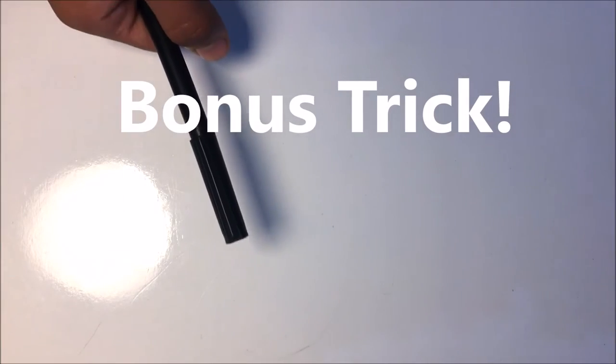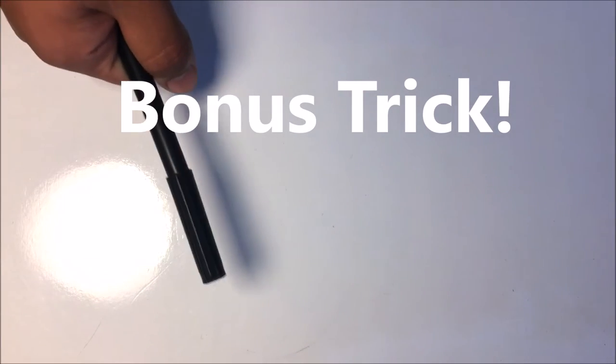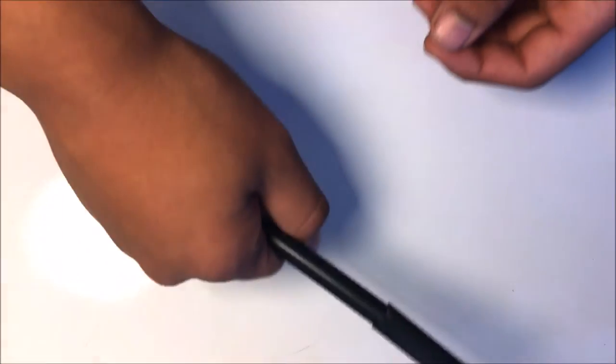Here's a bonus trick you can do with the pen. So, first, you ask your friends that they will be wrong five times in a row, even though they have a 50-50% chance. Then, they say, okay, sure. I bet I can win.